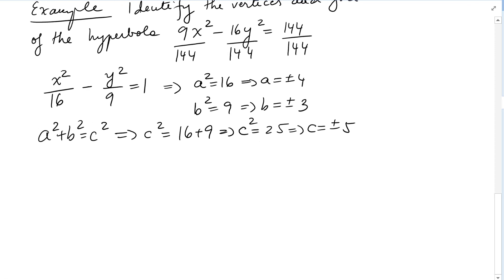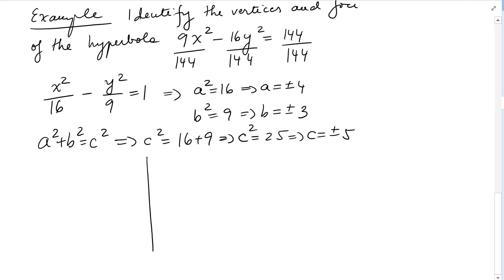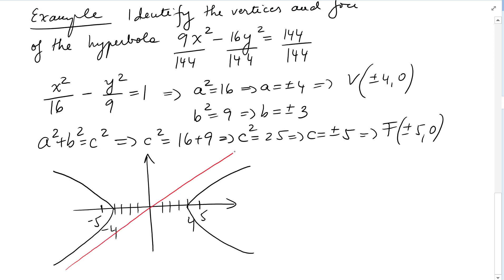So the vertices are at (±4,0), and it goes like this from the vertices. And the foci are at (±5,0), and it does make sense—the foci are outside the vertices. And then we also have the slant asymptotes.